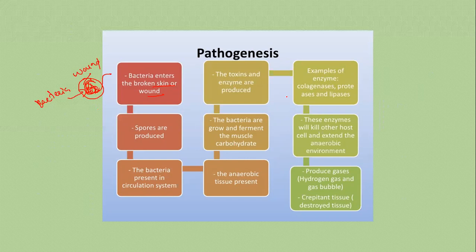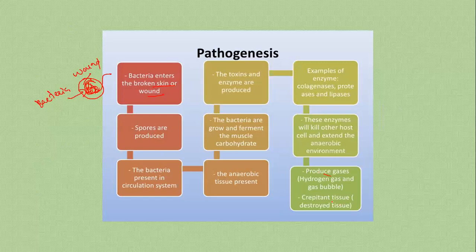Examples of enzymes produced include collagenases, proteases, and lipases. These enzymes kill other host cells and extend the anaerobic environment. They are very powerful enzymes with the capacity to destroy nearby cells, allowing the infection to extend further. The bacteria also produce gases — mainly hydrogen gas — causing gas bubbles and crepitant or destroyed tissue.